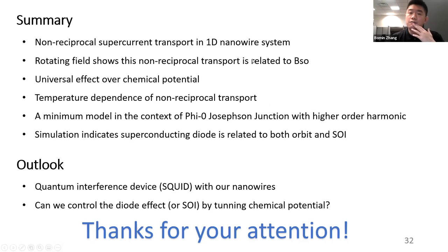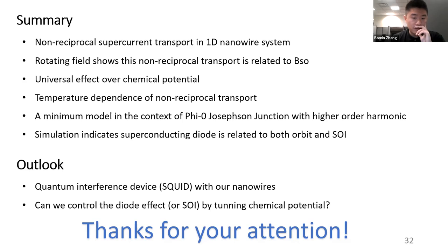In summary: we have observed non-reciprocal supercurrent transport in 1D nanowire Josephson junctions. Rotating the field shows this non-reciprocal transport is related to the Rashba effective field. This effect is universal over chemical potential and six devices show similar results. We studied the temperature dependence and give a minimal model considering higher harmonics in the context of phi-0 Josephson junctions. Our simulation indicates the superconducting diode effect is related to both orbital effects and spin-orbit interactions. Thank you for your attention, please let me know your questions.